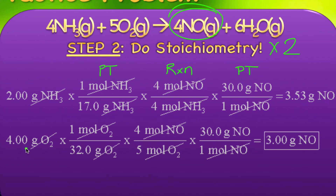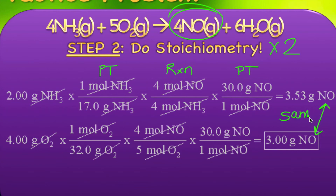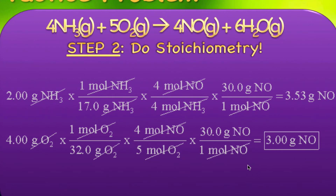Then do the same with oxygen: start with 4 grams of O2, divide by its molar mass, apply the mole ratio, and go to the same product — nitrogen monoxide. This time we only produce 3 grams of nitrogen monoxide. It is critical that you end at the same chemical each time; otherwise you cannot compare and identify the limiting reactant.